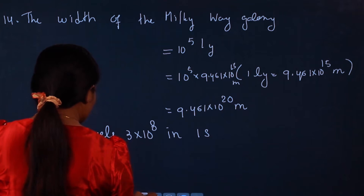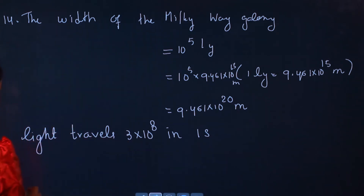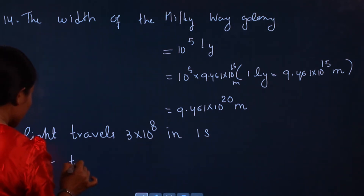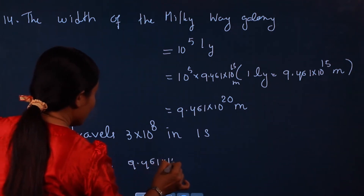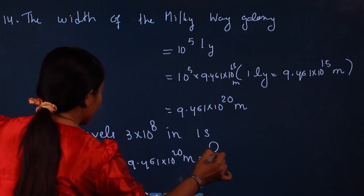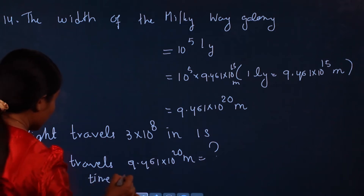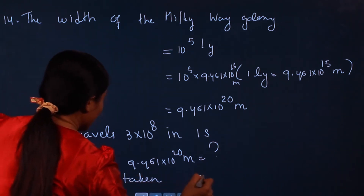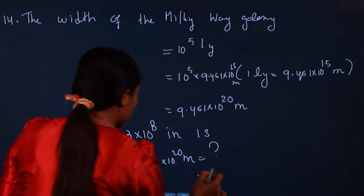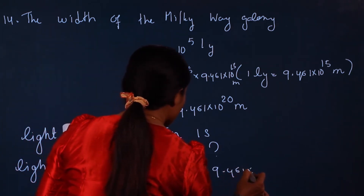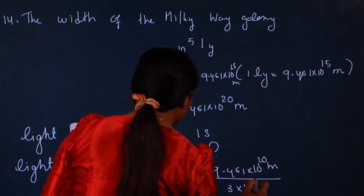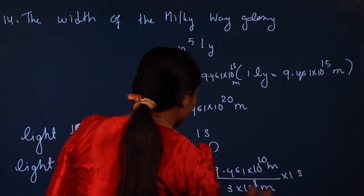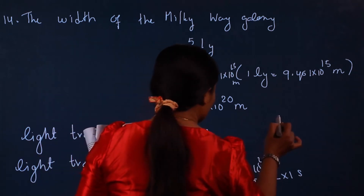We are going to look at 9.461 × 10 to the power 20 meters. So now we will be able to work with this: 9.461 × 10^20 meters, and the speed of light is 3 × 10^8 meters per second.